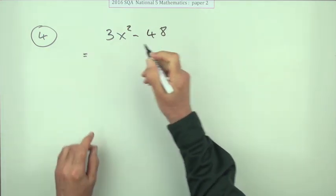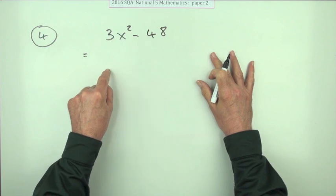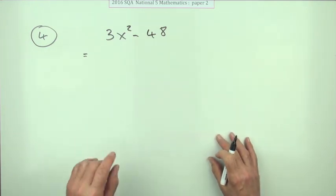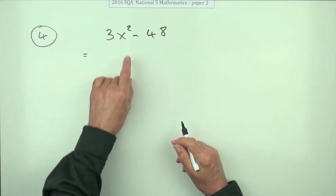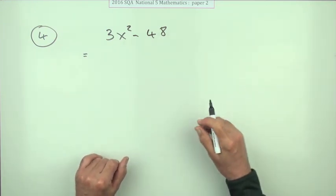Remember, the first rule of factorisation is take out any common factors first before you start throwing brackets all over the place. So don't just look at the x-squared and go, oh, I'll have a bracket there. No,